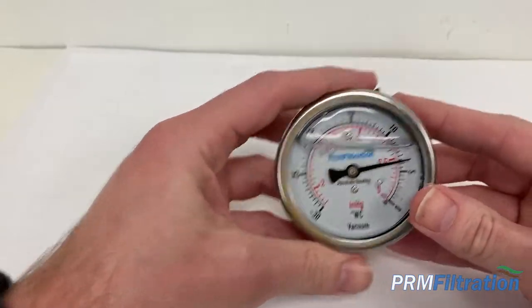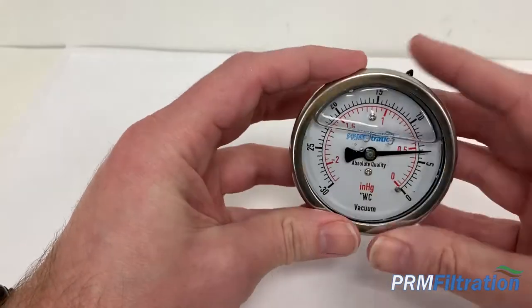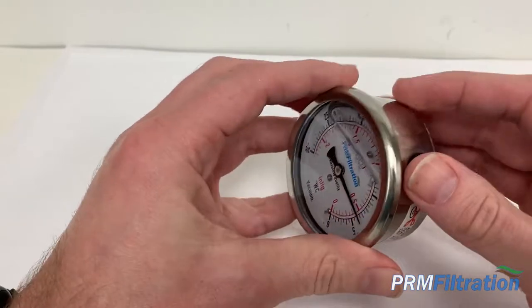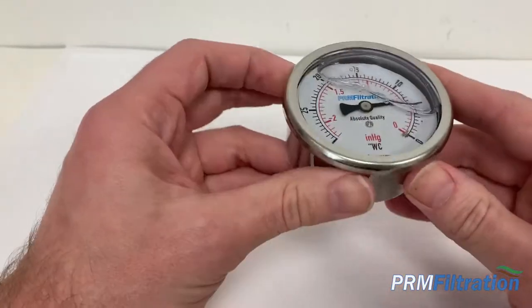We have vacuum gauges and pressure gauges, and a lot of these gauges will have a liquid-filled center with glycerin in it. It's just a vegetable glycerin. You can get it at any grocery store or hardware store.